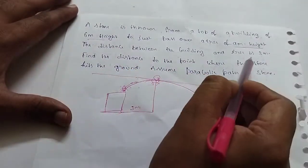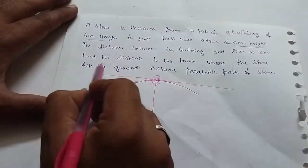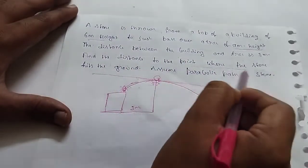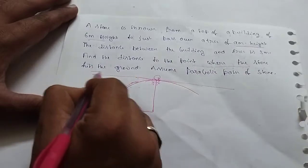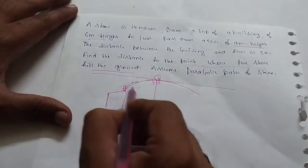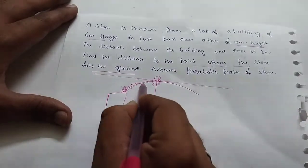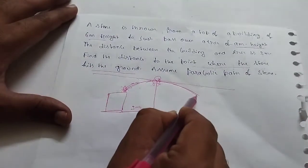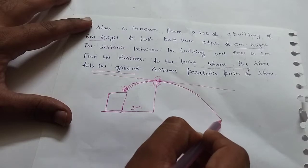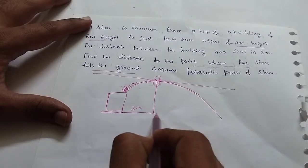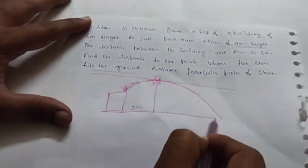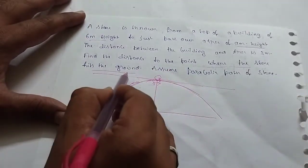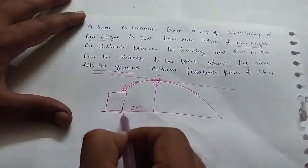The distance from the building to the tree is 3 meters. Find the distance to the point where the stone hits the ground.